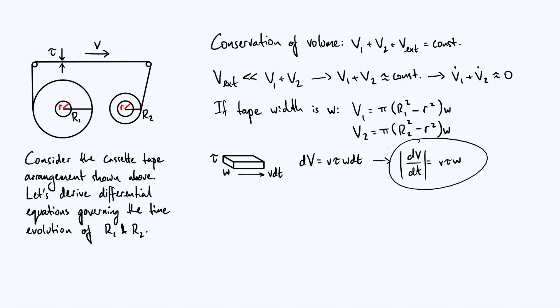and that's equivalent to assuming that the velocity of the tape is the same everywhere so that the external bit of tape doesn't change its length. That means that we can set v1 dot to just minus this, and we can set v2 dot equal to positive that same quantity.